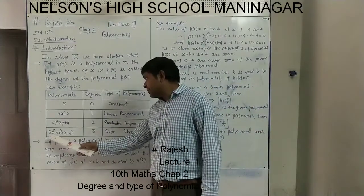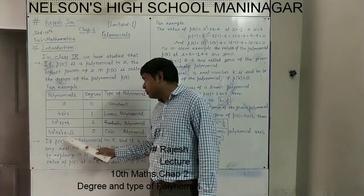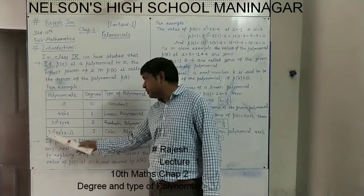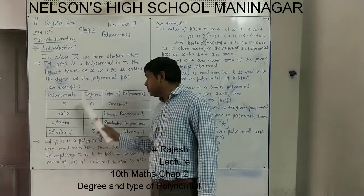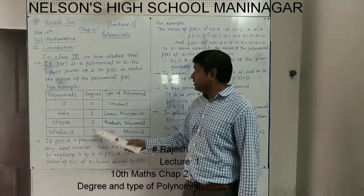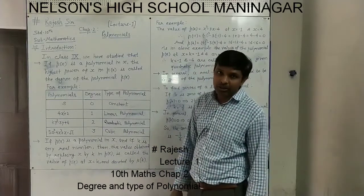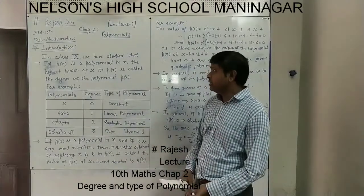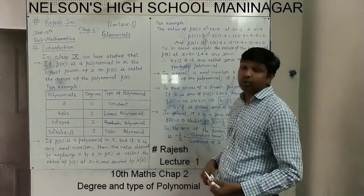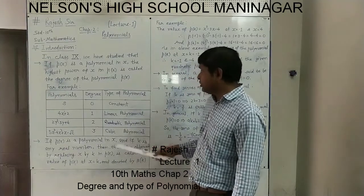Similarly, in the next example we have 5x cubed minus 4x squared plus x minus 2. Here the variable is x and the highest power of x is 3. So 3 will be the degree of this polynomial. If the degree is 3, the type of polynomial is considered a cubic polynomial. This is actually a recall of 9th standard only, but we have to write and learn it — it is very useful to us.